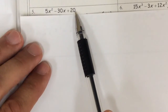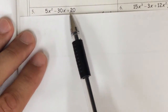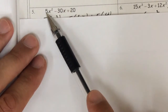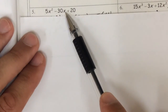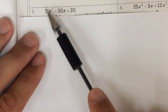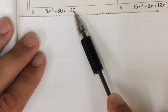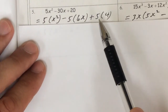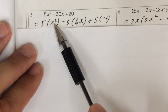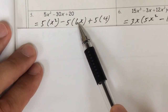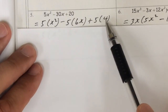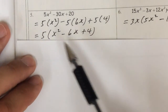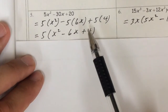5x squared minus 30x plus 20 — now we have more than two terms. We can look for the common factor in all three. x is only in two of the terms so it's not part of the common factor. But 5, 30, and 20 have 5 as a common factor. So x squared is left from the first term, 6x is left from the second (5 times 6 is 30), and 4 is left from the third (5 times 4 is 20). So we factor out the 5 and get 5 times x squared minus 6x plus 4.